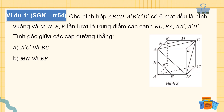Bài ví dụ đầu tiên: cho hình hộp ABCD A'B'C'D' có 6 mặt đều là hình vuông. M, N, E, S lần lượt là trung điểm của các cạnh BC, BA, AA' và A'D'. Yêu cầu: tính góc giữa các cặp đường thẳng A'C' và BC. Ta đi với câu A trước - xác định góc giữa đường thẳng A'C' và đường thẳng BC.